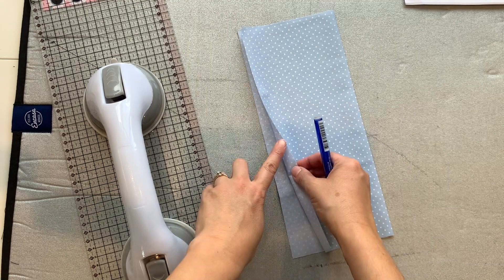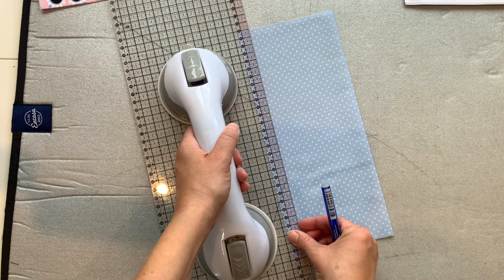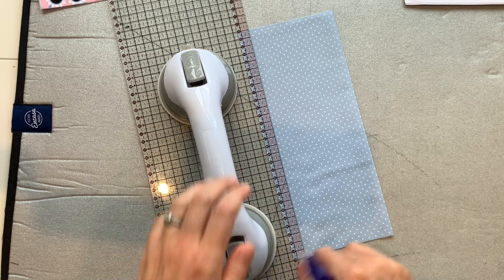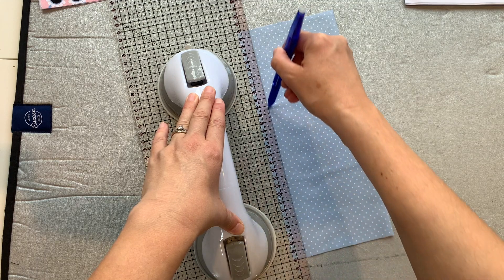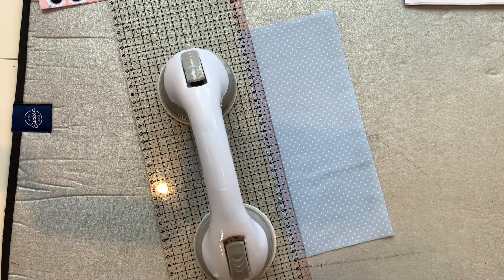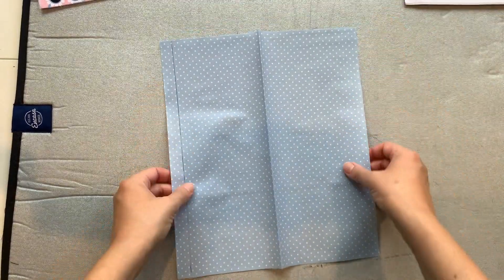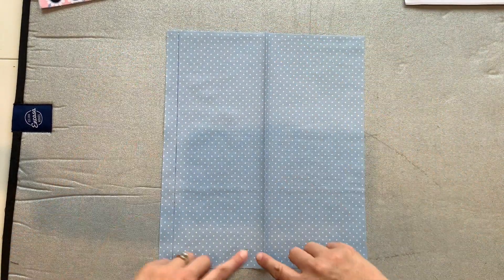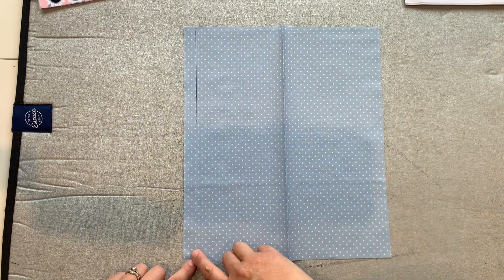To draw a line, so this is my folded, my raw edges here of my folded piece. I want to draw a line 1.5 centimetres up from those raw edges. And I'm using a heat erasable fabric pen. Then you want to unfold that and lay it out flat. So you've got your fold pressed there and you've got your 1.5 centimetre line drawn on there.